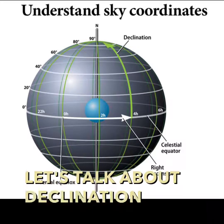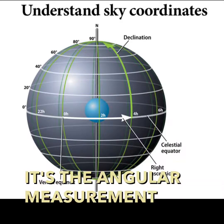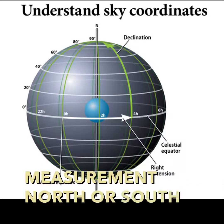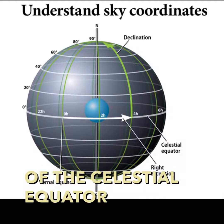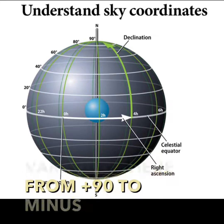Let's talk about declination first. It's the angular measurement north or south of the celestial equator and so it can vary anywhere from plus 90 to minus 90.